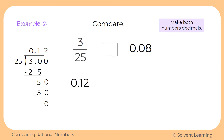Now we're comparing twelve hundredths to eight hundredths, and we can see that twelve hundredths is greater than eight hundredths. So that means our original numbers: three twenty-fifths is greater than eight hundredths.